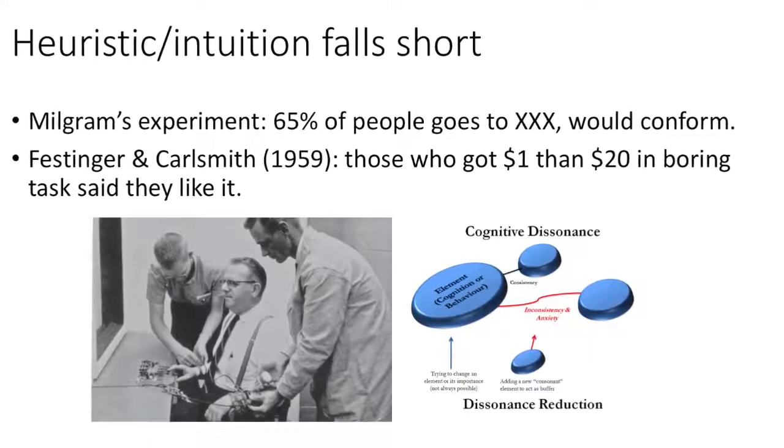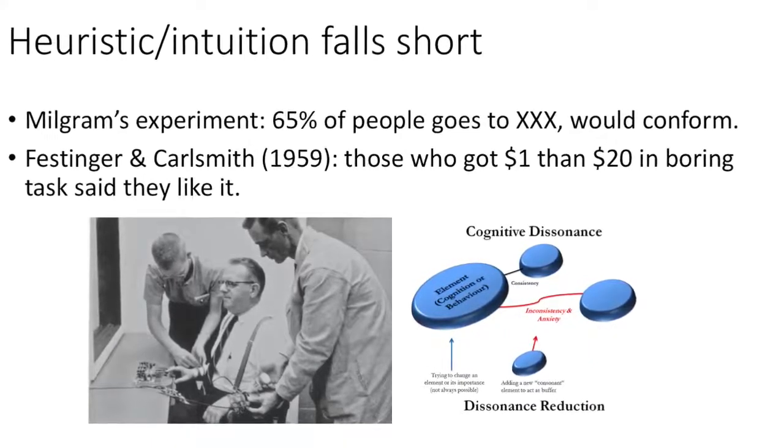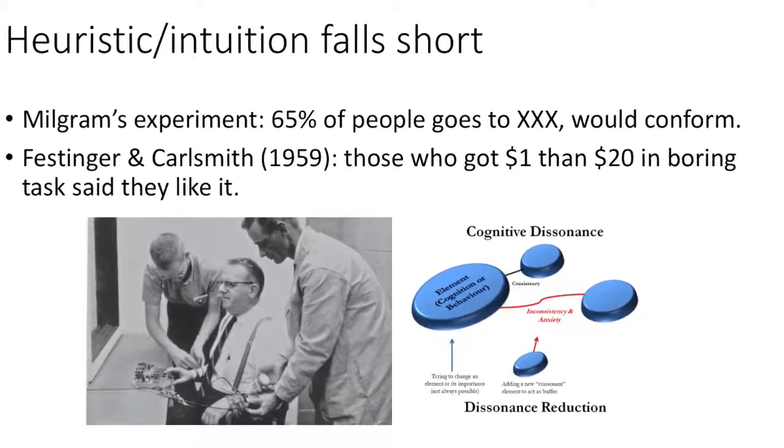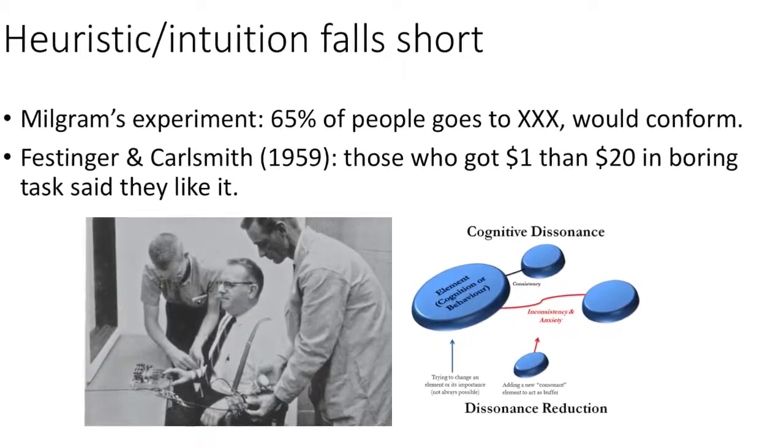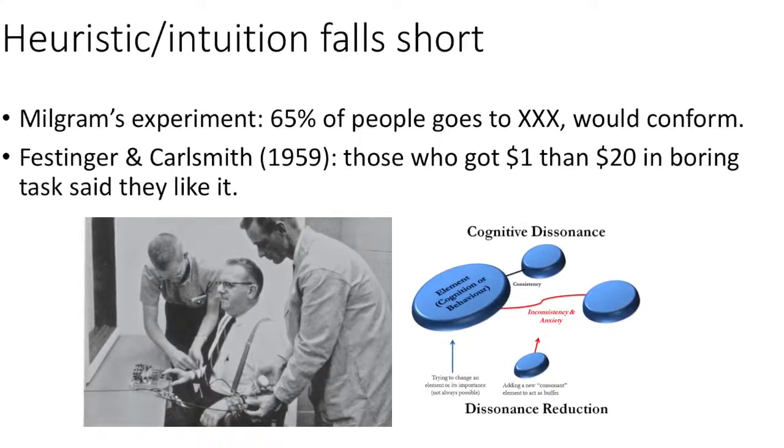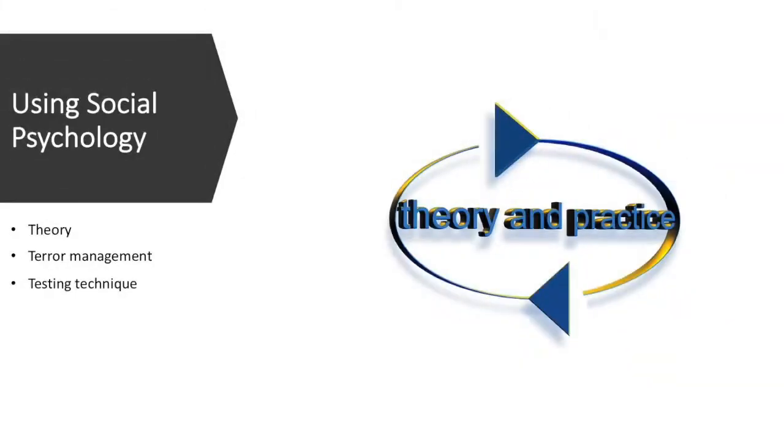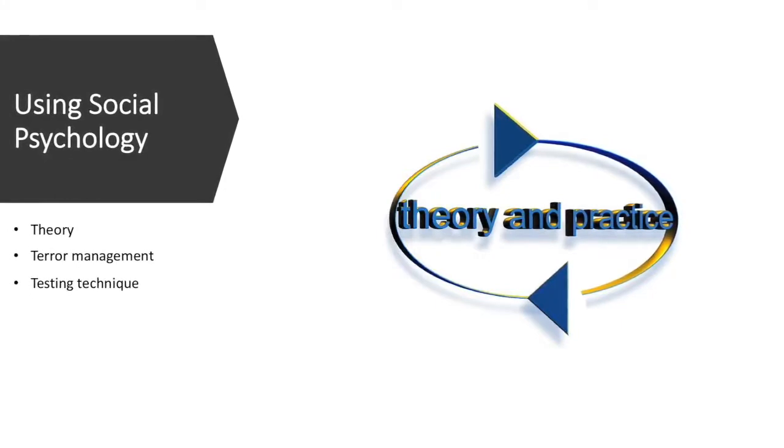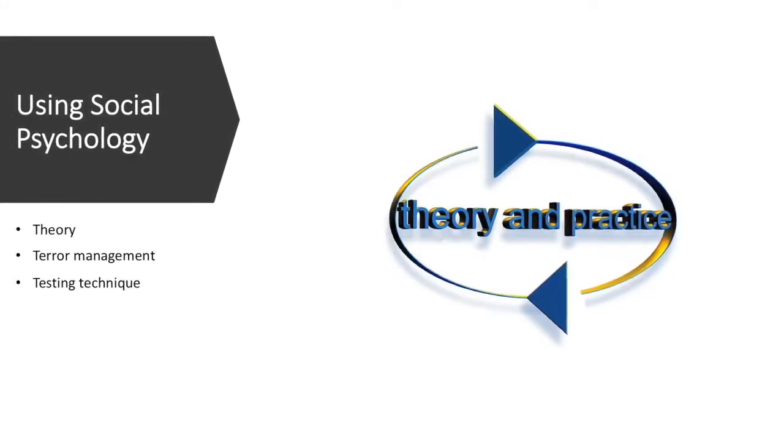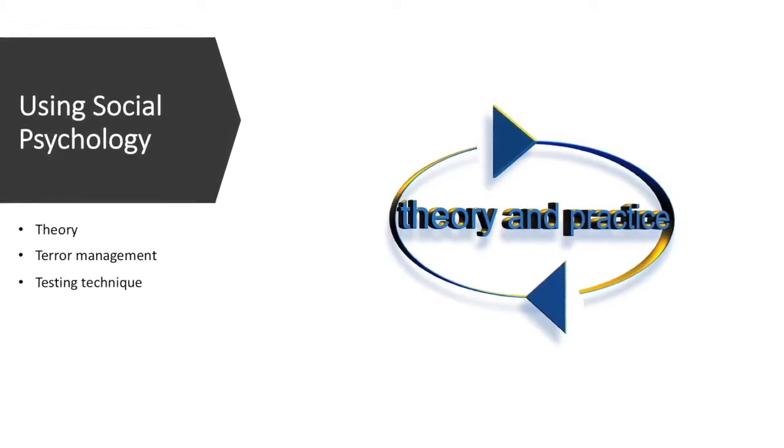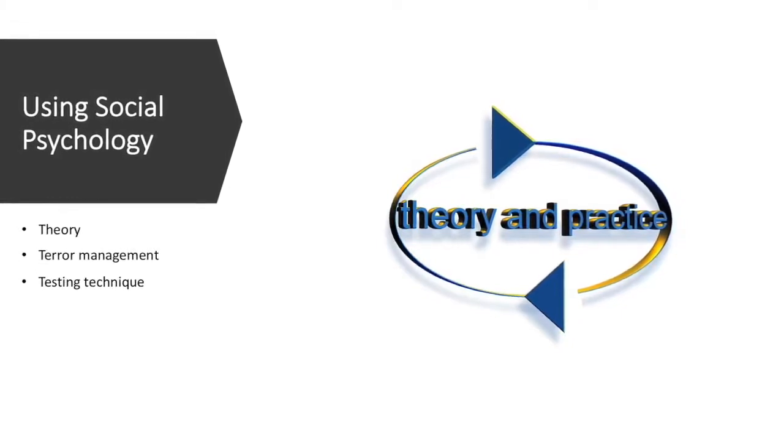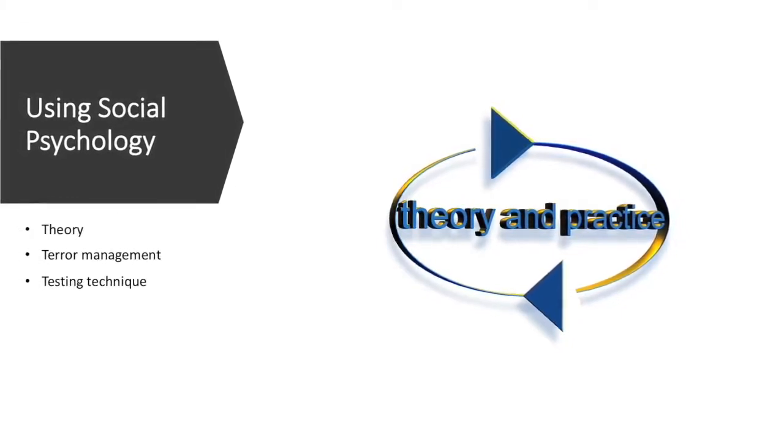Milgram's as well as Festinger's and Carlsmith's studies show that our own intuitions about ourselves are not as they appear to be. In order to conduct research in social psychology to discover certain phenomena that don't always abide by our intuition, we rely on theory, which is the general principles that account for empirical findings.